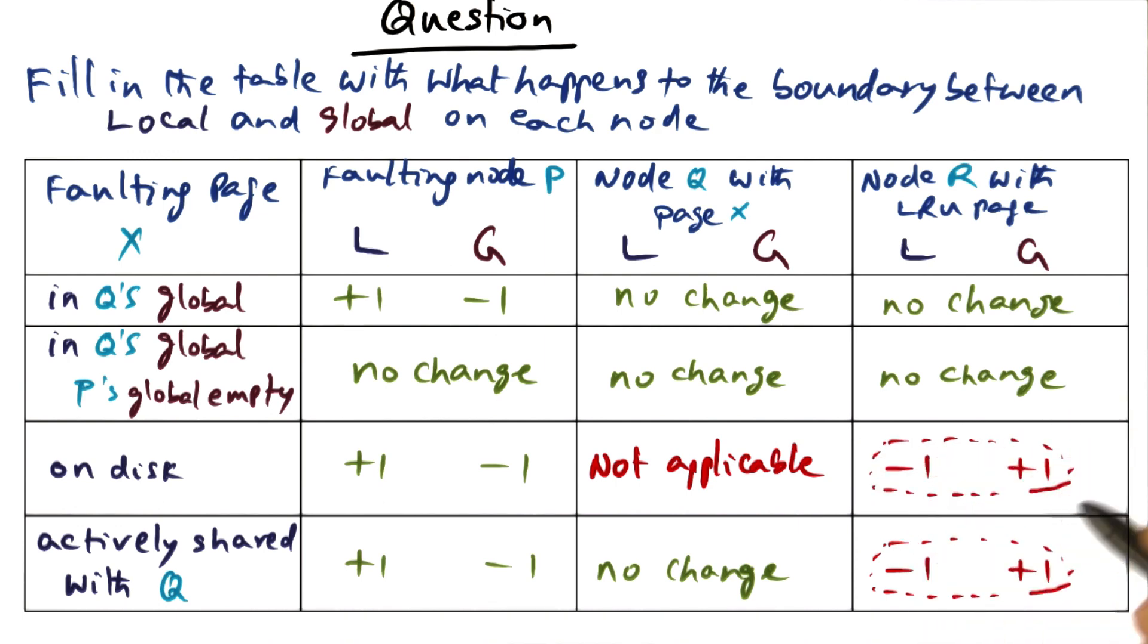And just like in this case where I have to make room for the cumulative memory pressure on the cluster by throwing out a page onto the disk, and similar to this case, if the candidate replacement page comes from the local part of R, then it is going to result in the local part shrinking by one and the global part increasing by one to accommodate the page that came from here.